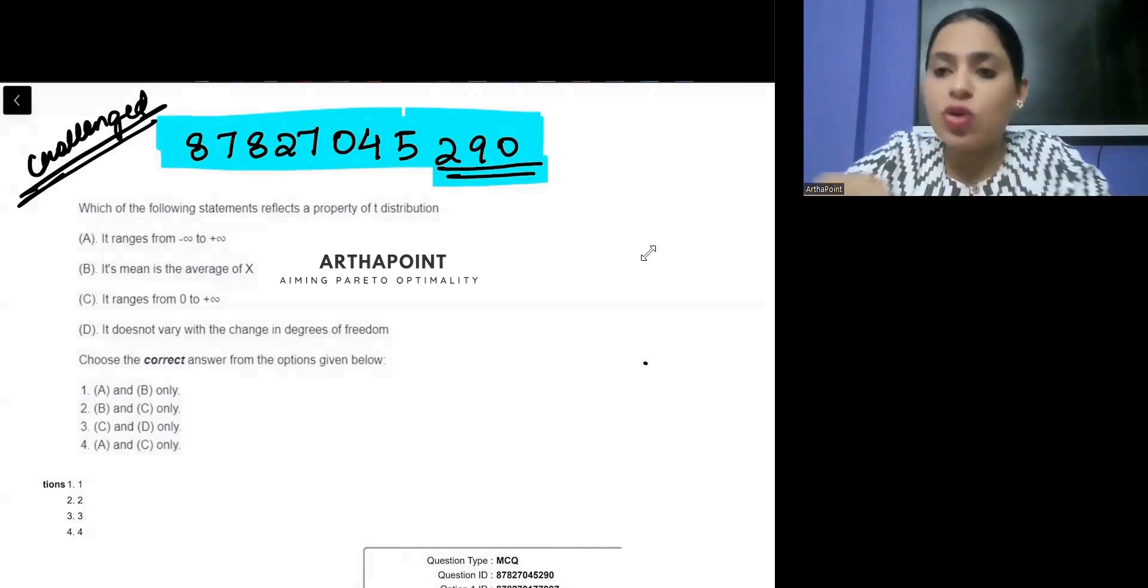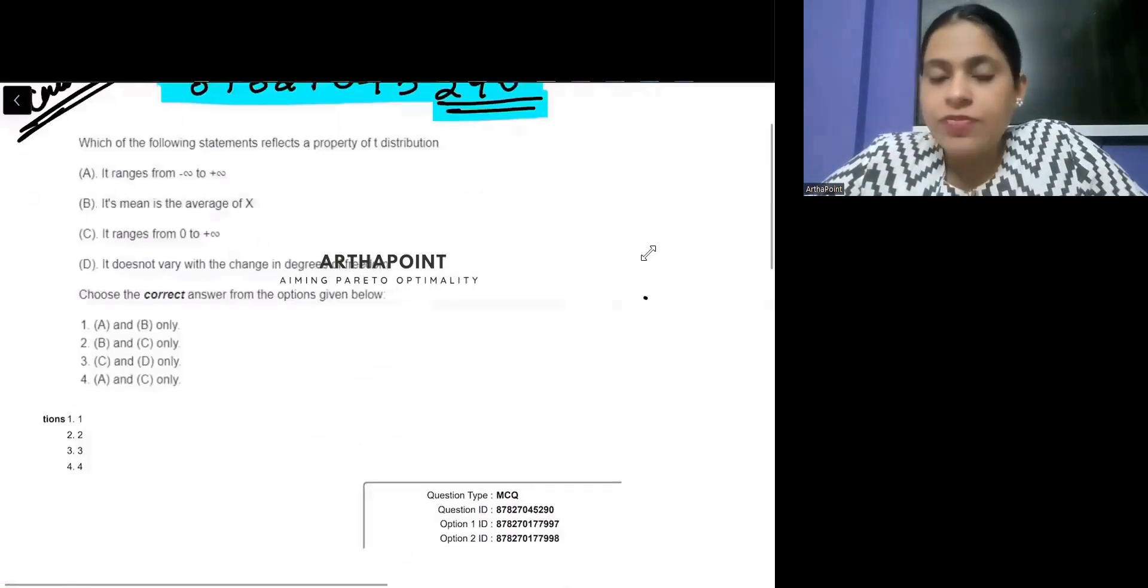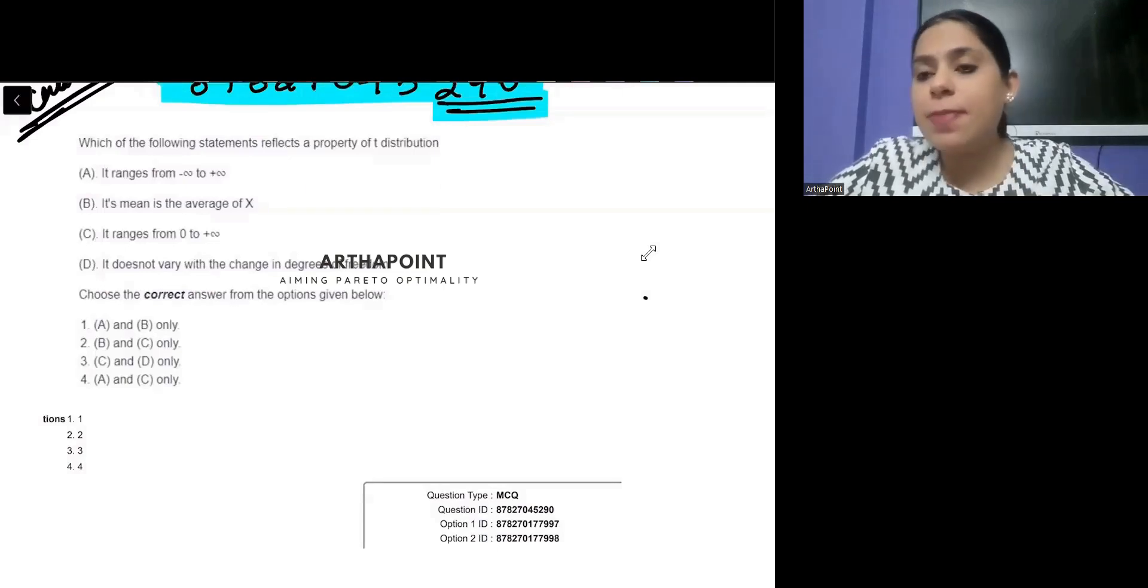Agar internet pe ja kar mein koi blog likh deti hun, then that is not a proof of anything. You need to, you can also quit and write something on the internet. It does not mean it is correct, right? So, to prove something, you need to pick up a publication.